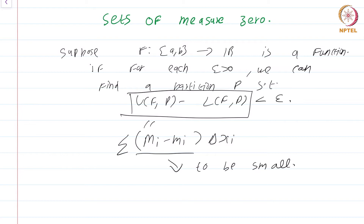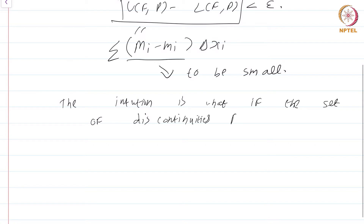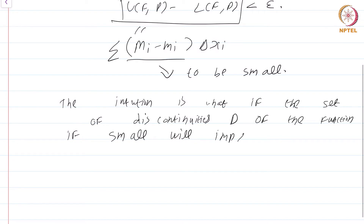What we are going to see in the next few modules is that the precise condition under which f would be integrable is if the set of discontinuities — the set of points where the oscillation of the function f is greater than 0 — is small. The intuition is: if the set of discontinuities, the bad points of the function f, is small, it will imply f is integrable, and vice versa. This is something that is palatable.